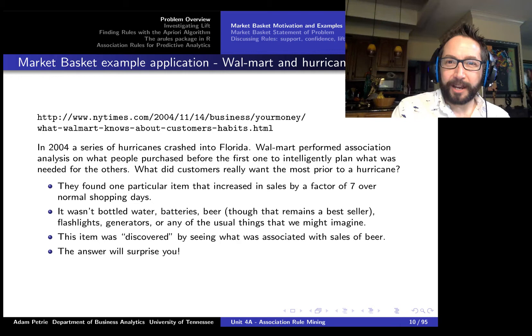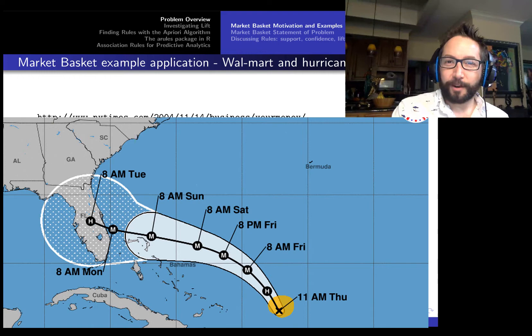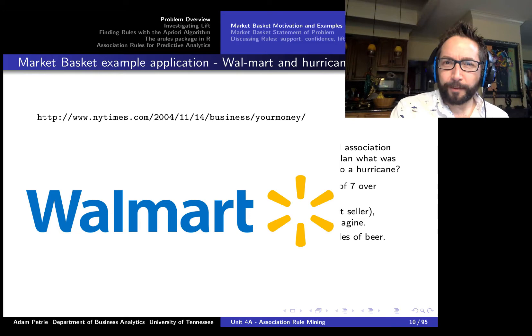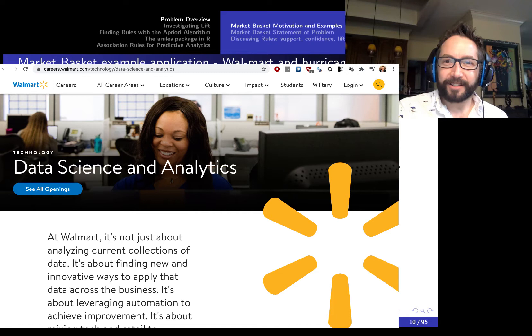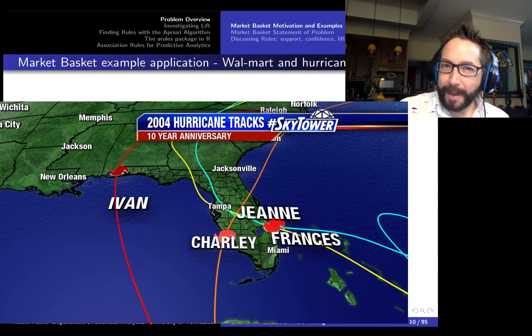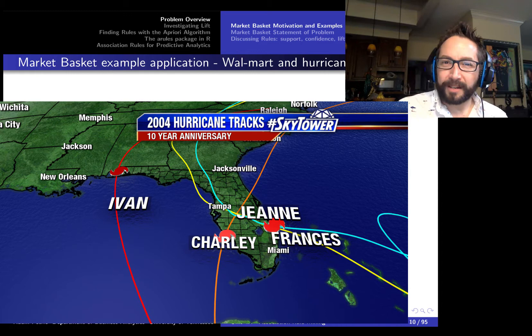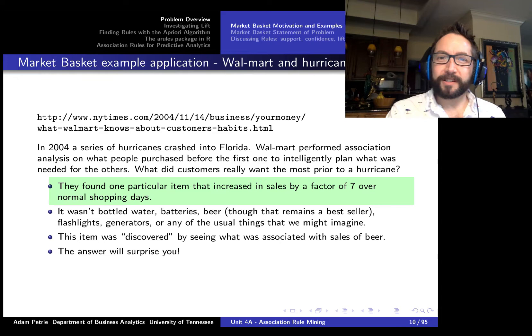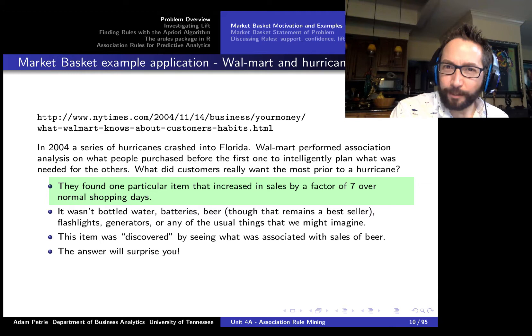And in fact, I think one of my favorite real world examples of this is dealing with hurricanes. It's hurricane season right now. Luckily, there's no hurricanes that are forecast to crash down on the United States right now. But Walmart is well known for doing analytics with its shoppers transactional histories and actually use market basket analysis with a surprising twist at the end. So back in 2004, a series of hurricanes crashed into Florida America. And Walmart decided to do some analytics on the customer's transaction histories to see what items people tended to purchase together in order to help prepare themselves for the incoming disaster. And what's kind of crazy is that they found that one particular item increased in sales by a factor of seven over normal shopping days. And in fact, it was discovered by looking to see what items were typically purchased together when people were purchasing beer.